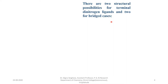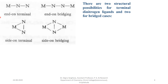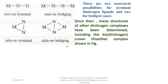There are two structural possibilities for terminal dinitrogen ligands and two possibilities for bridging cases. For terminal: end-on terminal, that is metal-nitrogen-nitrogen; and side-on terminal, that is metal coordinated sideways to N2. For bridging: end-on bridging, that is metal-nitrogen-nitrogen-metal; and side-on bridging, where the nitrogen-nitrogen bond coordinates to both metal atoms simultaneously.